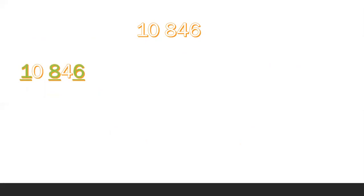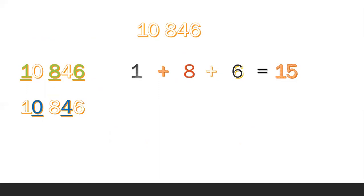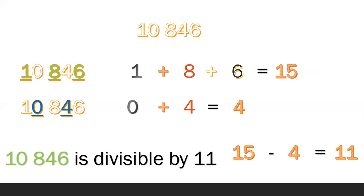Another example: 10,846. The digits in the odd places are 1, 8, and 6. Get the sum: 1 plus 8 plus 6 equals 15. The digits in the even places are 0 and 4. Get the sum: 0 plus 4 equals 4. Then get the difference: 15 minus 4 equals 11. Therefore, 10,846 is divisible by 11.